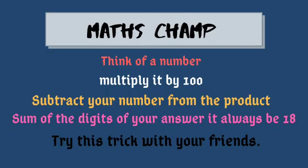Here is a trick for math champions. Think of a number, multiply it by 100, then subtract your original number from the product. The sum of the digits of your answer will always be 18. Try this trick with your friends.